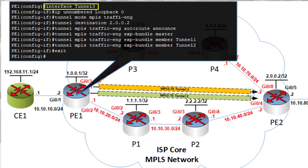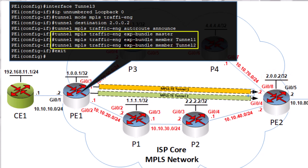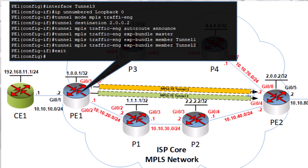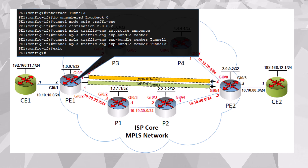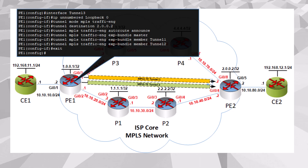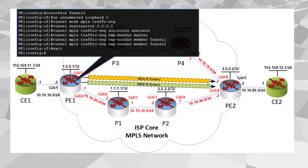Now let's create our master tunnel — tunnel 3. The rest of the configuration is the same as that of our member tunnels: we use the same loopback 0 as our local tunnel termination point, and the same tunnel destination of the loopback address of PE2. The EXP bundle commands are the key to creating this master tunnel. We specify that our tunnel is the master using the EXP bundle master command, and then we specify which tunnels belong to this bundle. Routing must be configured on the master tunnel — I've used autoroute announce. Once a packet is routed down the master tunnel, CBTS will kick in to determine whether it uses tunnel 1 or tunnel 2 depending on the configured EXP value.